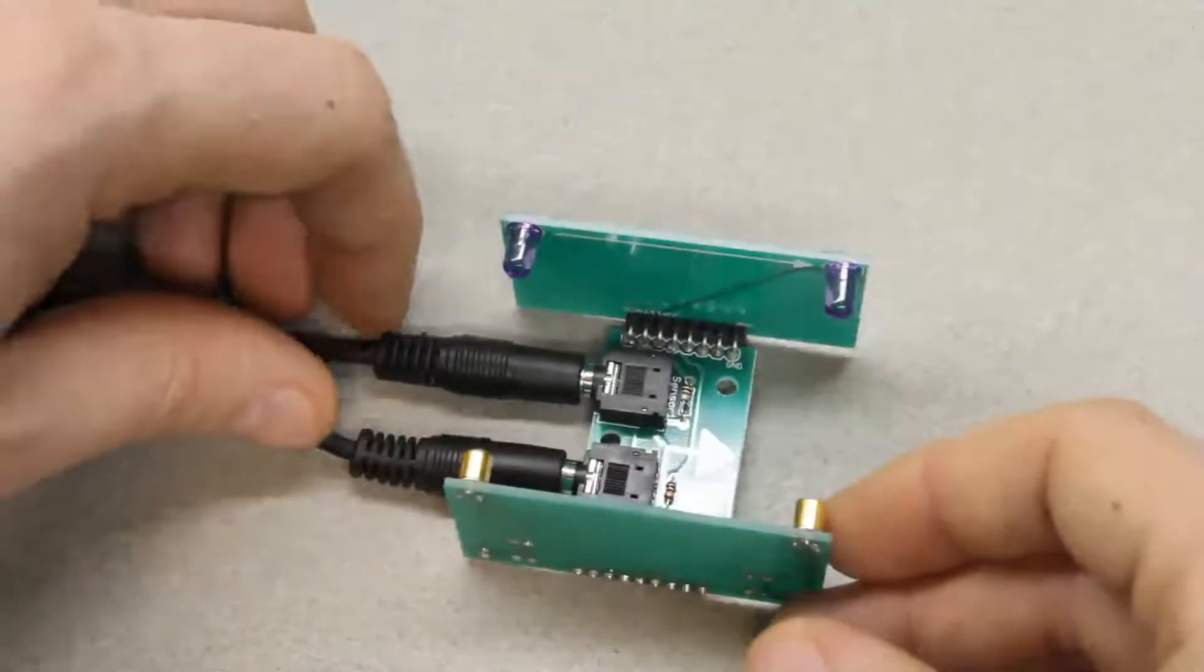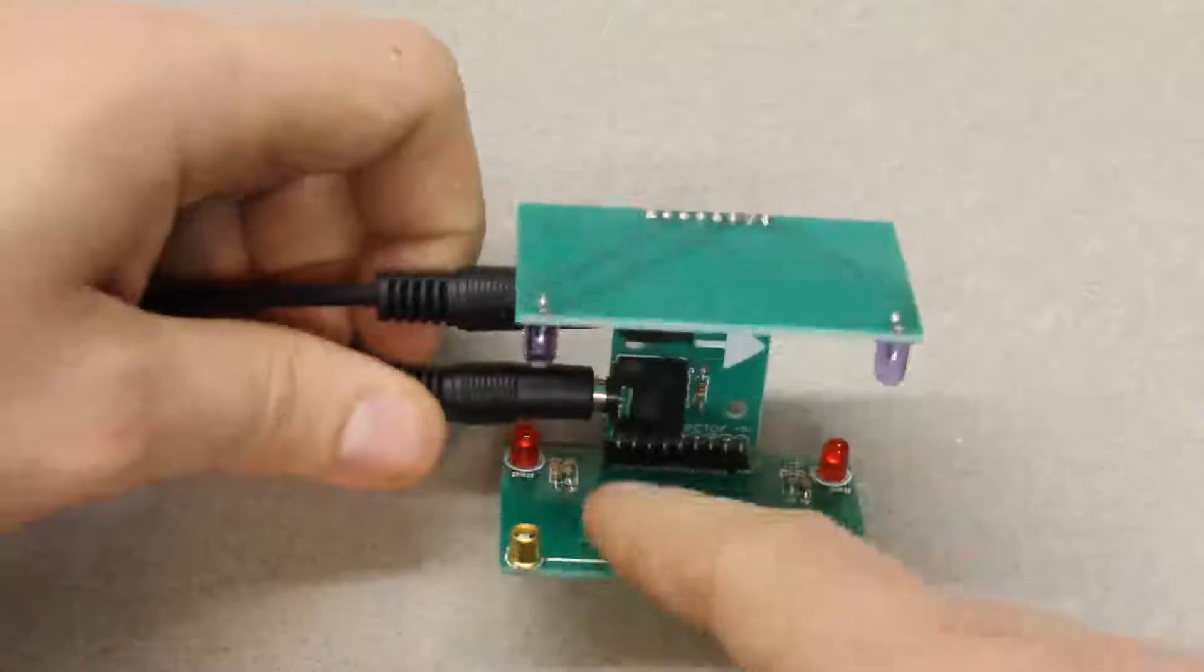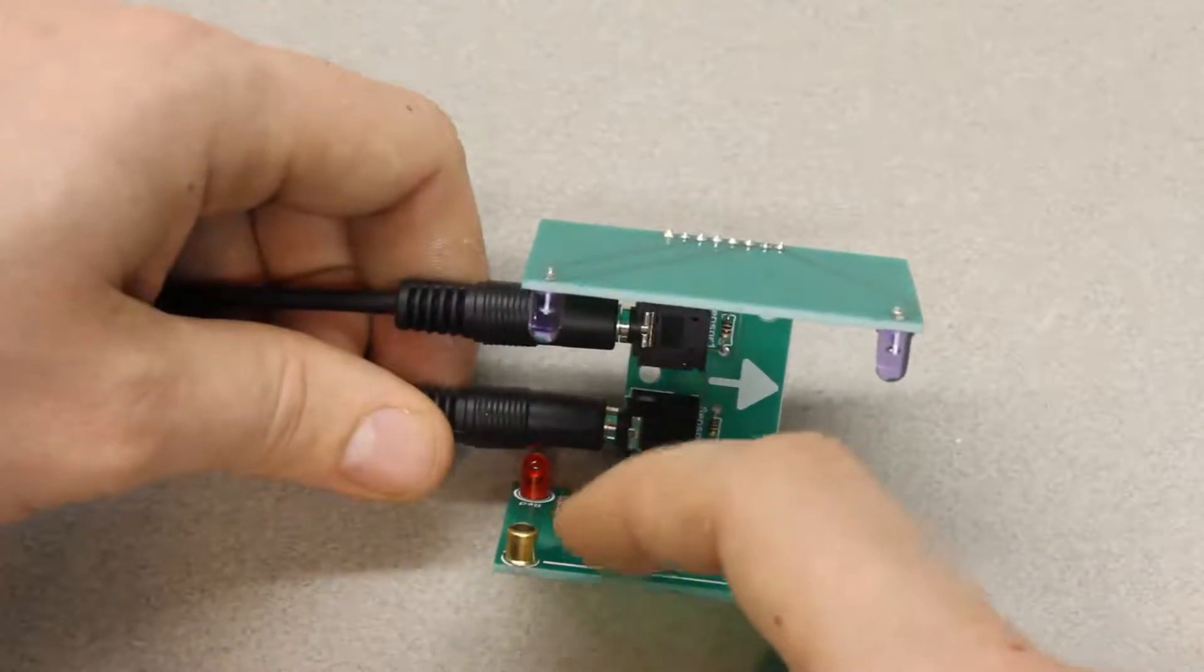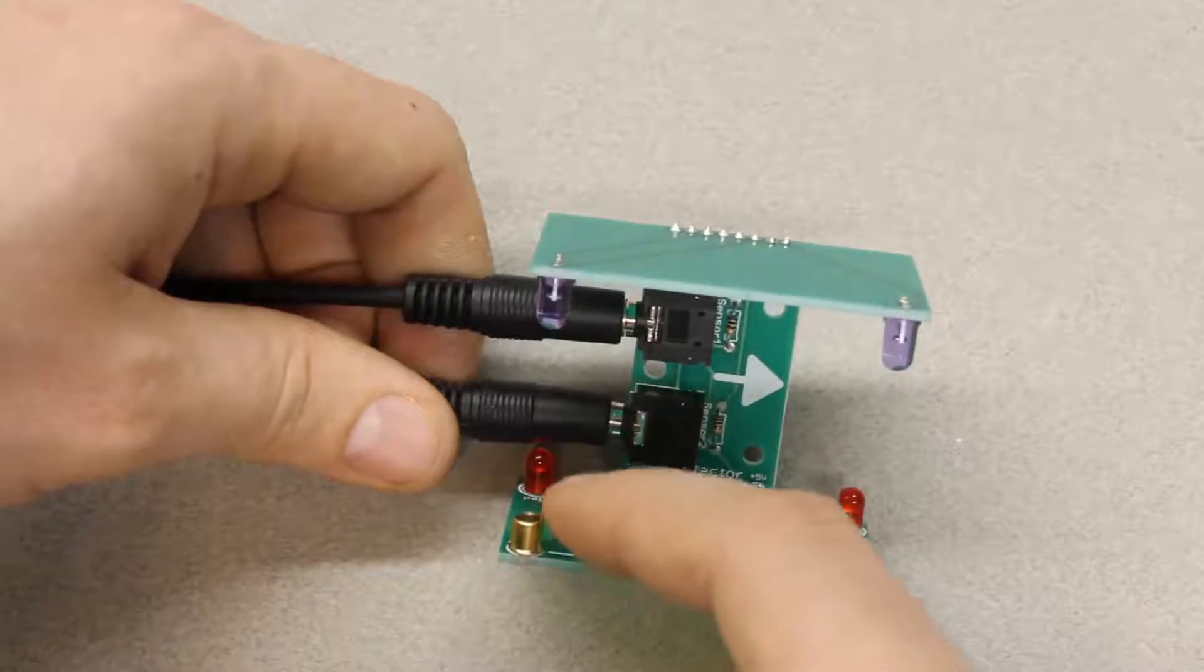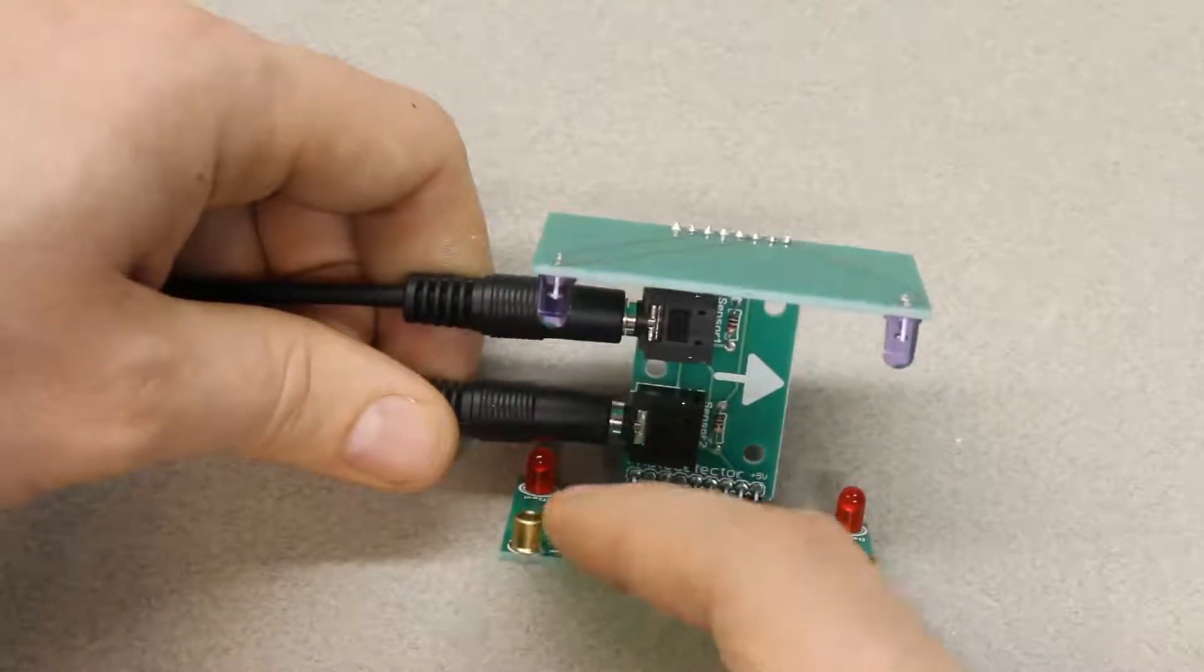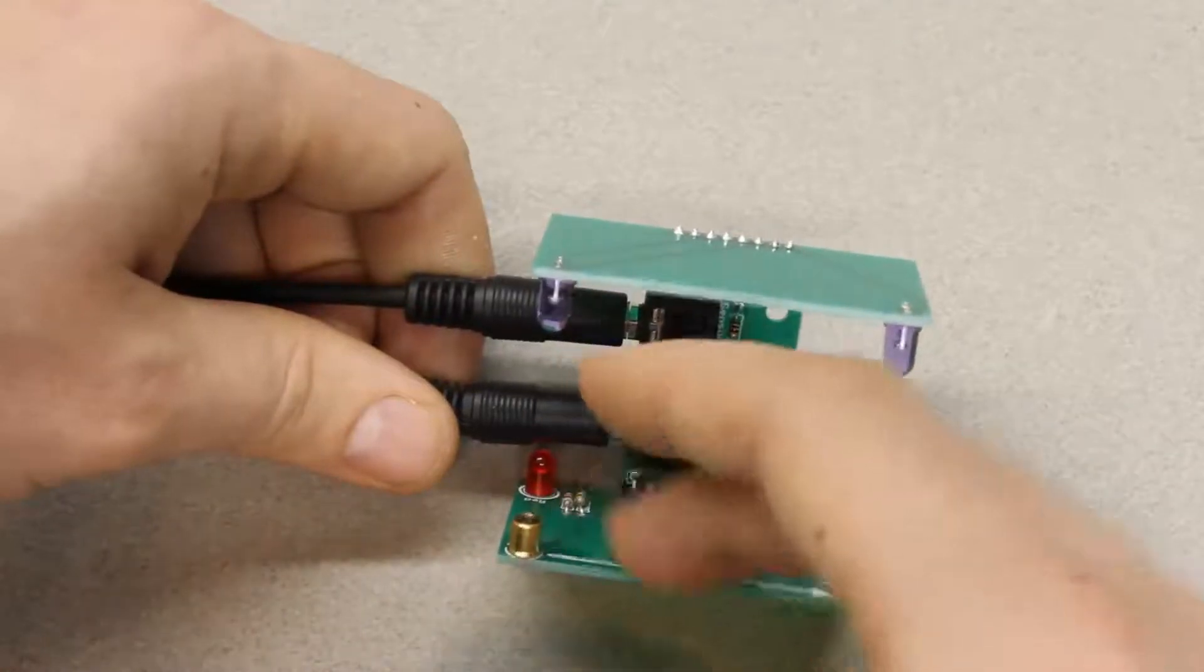The last improvement that I made was I put an extra resistor here that acts as a pull-down resistor for these photo detectors.